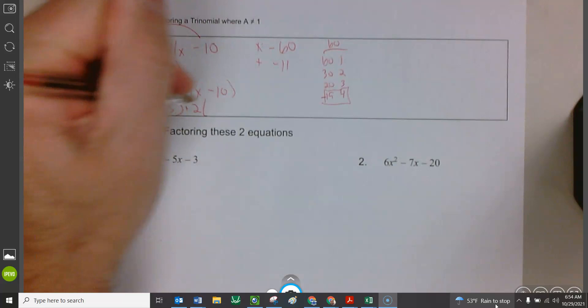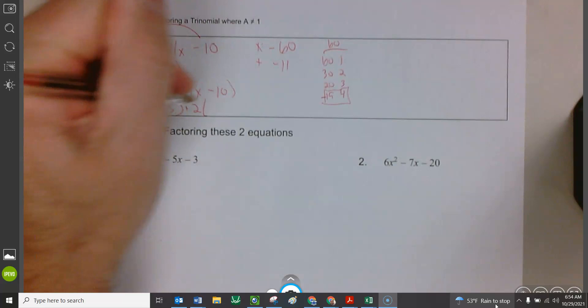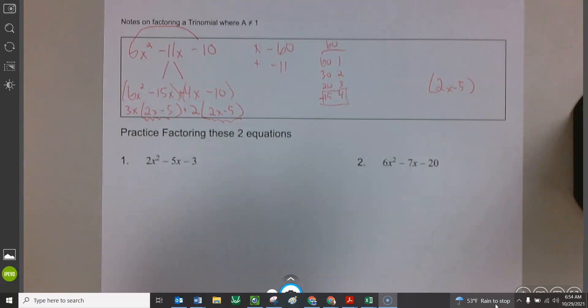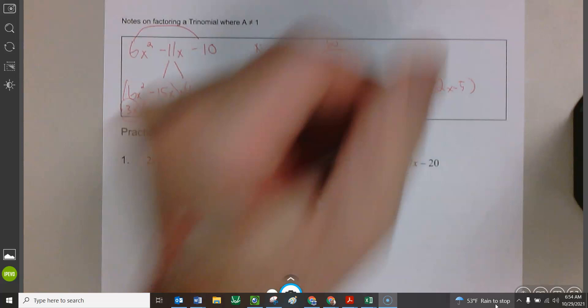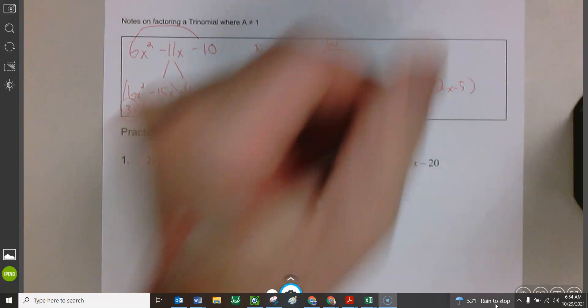These two are both even. So they both have a two in common. And that'll give me a two x minus five. Awesome. Again, since these match, that's one of my answers. Two x minus five. The other answer comes from the stuff that we GCF'd off. Three x and a positive two. Three x and a positive two.